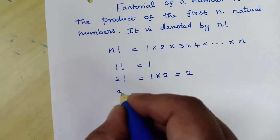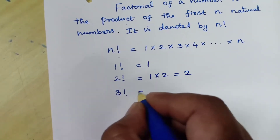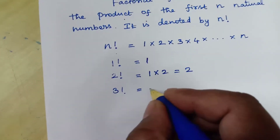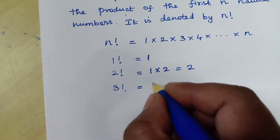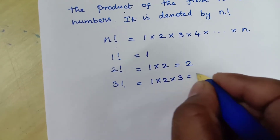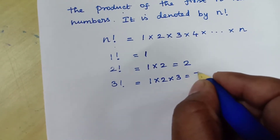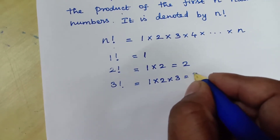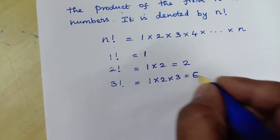Next, 3 factorial is the product of the first 3 natural numbers: 1 × 2 × 3, which is equal to 3 × 2, which is equal to 6.